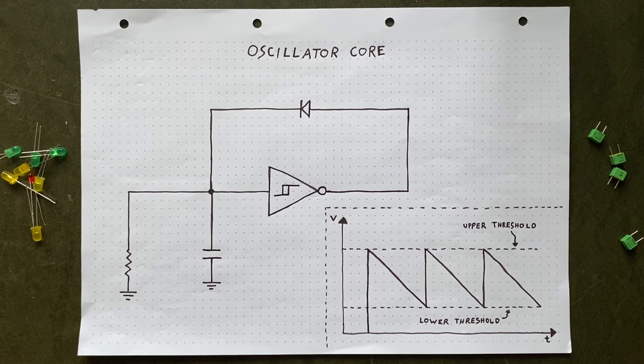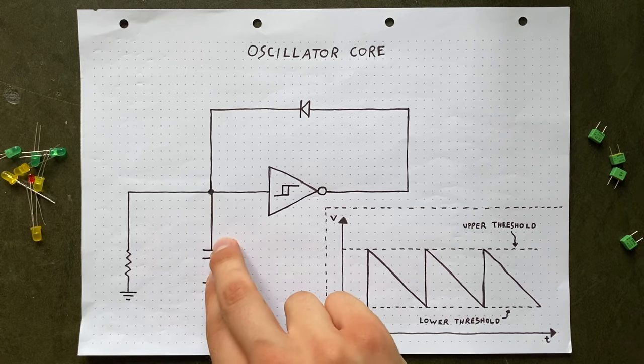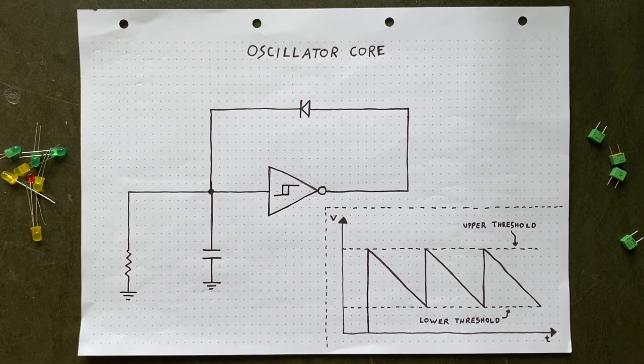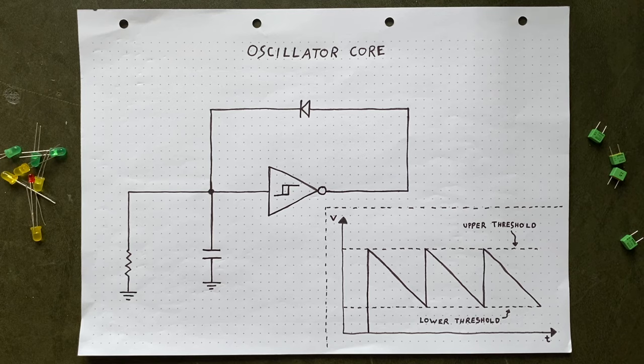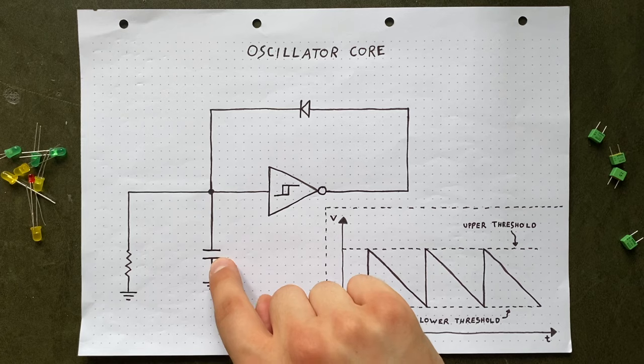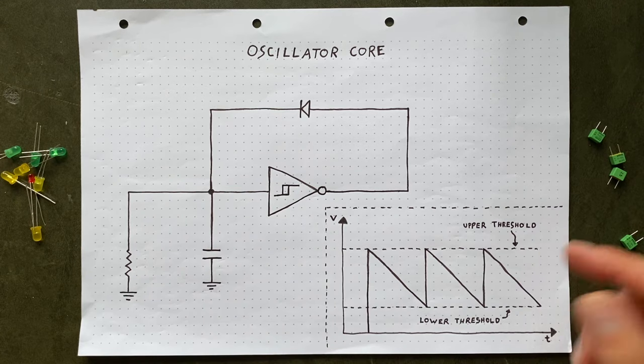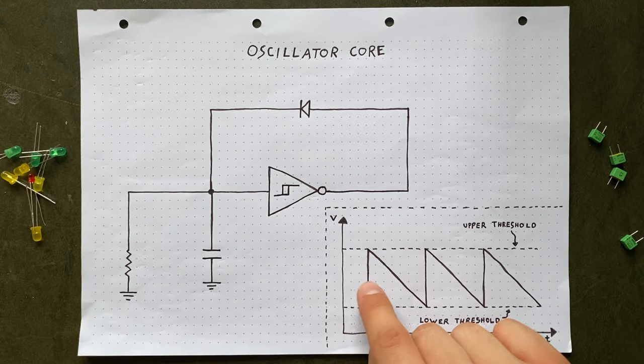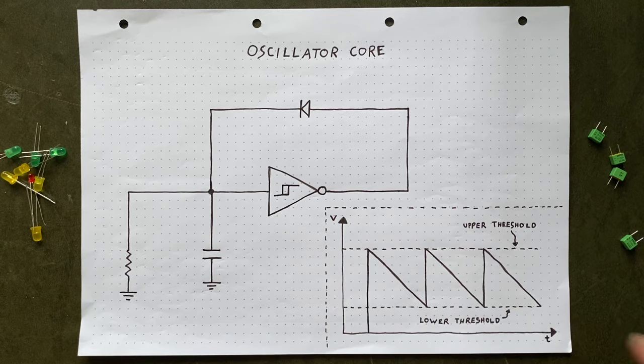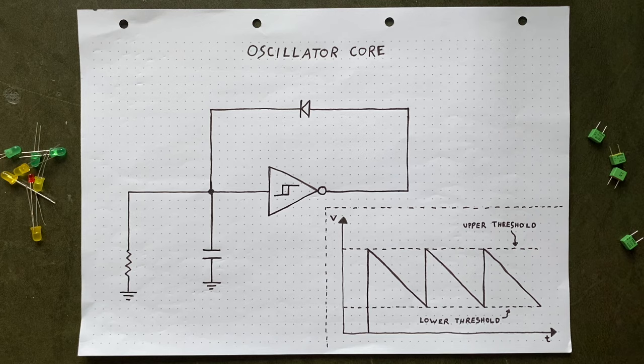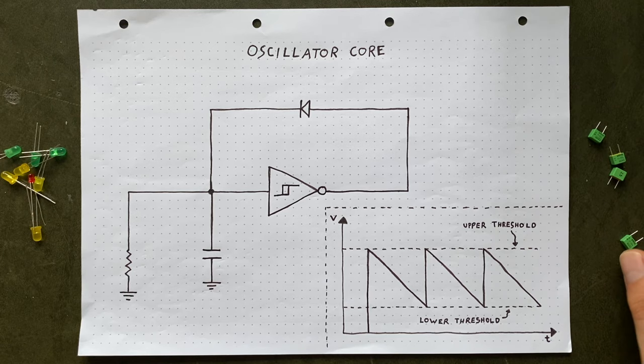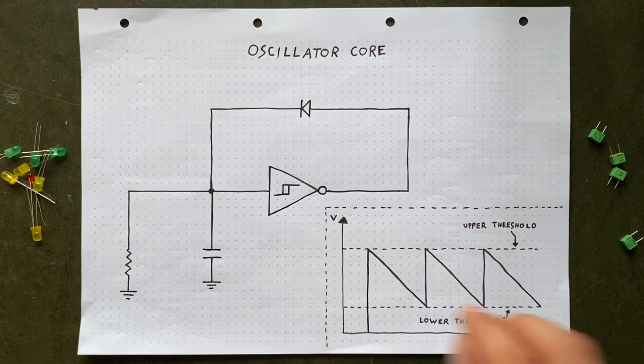So which route do we take? Changing the capacitance or changing the resistance? To be honest, that's pretty much a non-choice for two reasons. Reason one is that increasing the capacitance not only changes the second phase, but also the first phase of a wave along with it. If the capacitor is big enough, charging it will take more and more time until our wave morphs into a weird triangular shape.